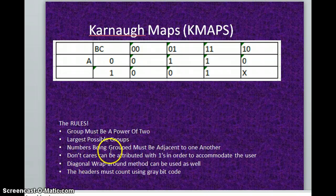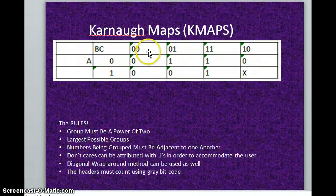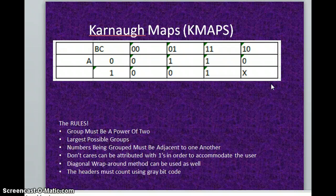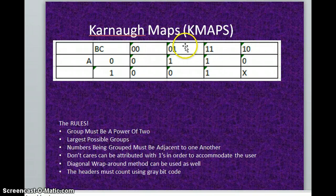You can also use a diagonal wraparound method. If two corner cells are both ones, you can wrap around and call that a group as well. It's not always the best way, but sometimes it's the only way. Just remember that the K-map headers must count using Gray code — you can't go in standard binary order, because that would mess up the grouping process.